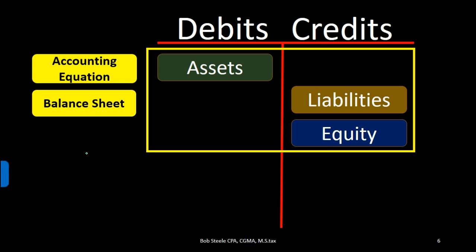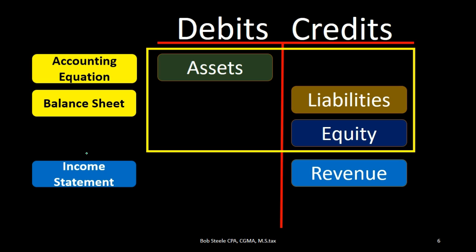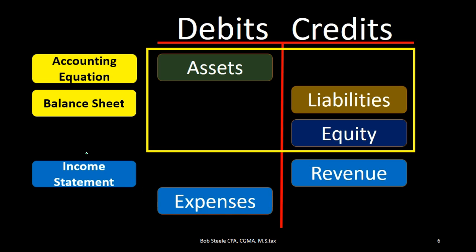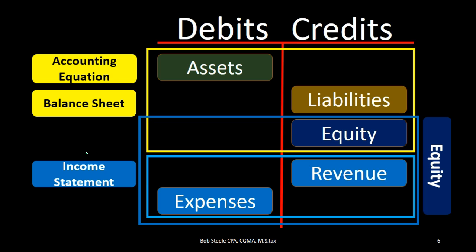What about the income statement accounts? Revenue has a normal credit balance — we just have to memorize that. Expenses have a normal debit balance. A common confusion is between cash and revenue: cash is an asset with a debit balance, revenue is different and has a credit balance. Revenue minus expenses hopefully gives us net income, and the entire income statement is part of equity.